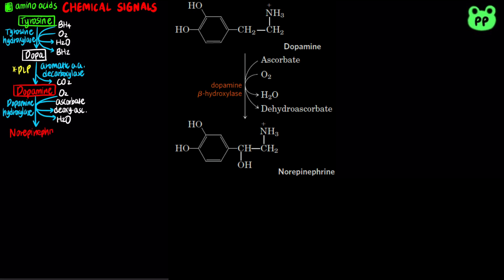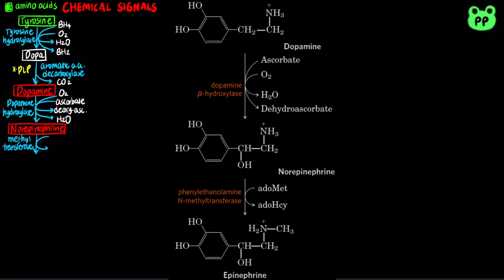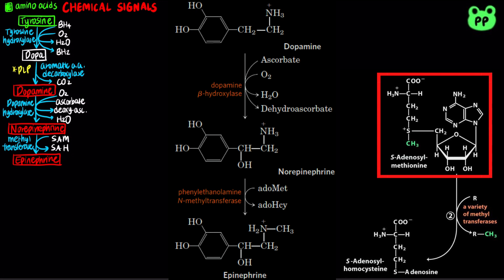The product norepinephrine, also known as noradrenaline, can be methylated by phenylethanolamine N-methyltransferase to form epinephrine, also known as adrenaline, with S-adenosylmethionine, abbreviated as SAM, as the donor of the methyl group.